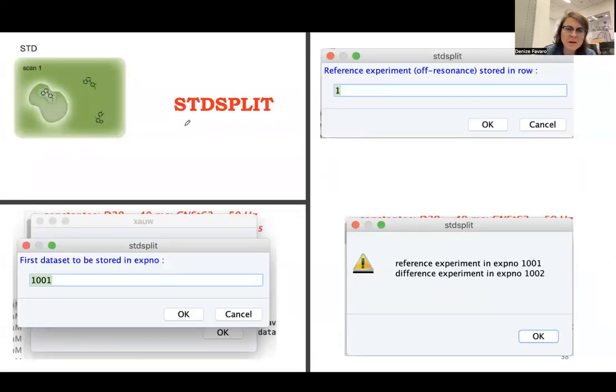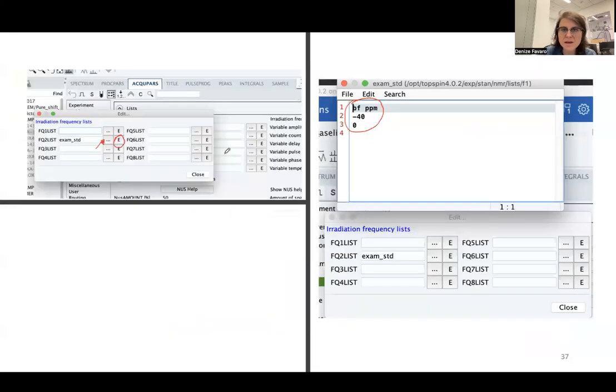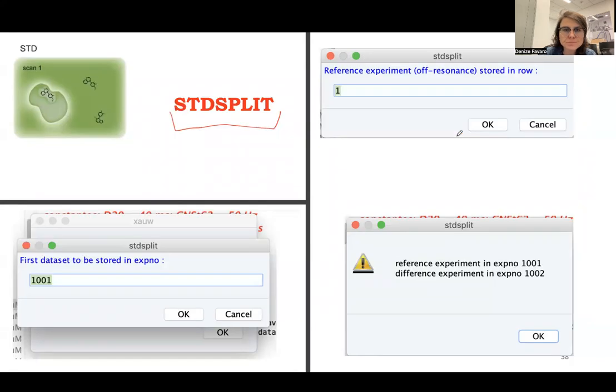And the processing is STD split. One important thing is as I have two different points, I have my TD. This is a pseudo 2D experiment. So my TD in F1, as I have only two points on my frequency list, is equal to two. So STD split is a macro and this macro actually splits your data into reference and the difference.